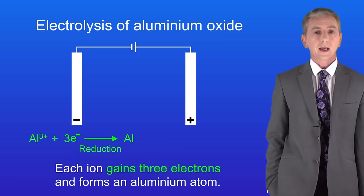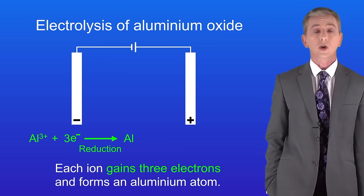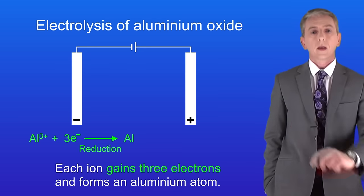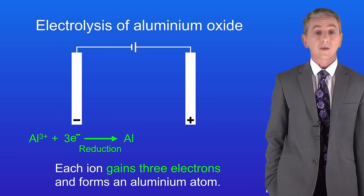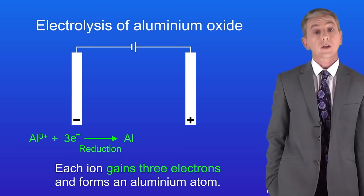Now if you're doing the higher tier then you need to memorize the half equation which I'm showing you here. That's an example of a reduction reaction because the aluminium ion is gaining electrons and again you need to memorize that.